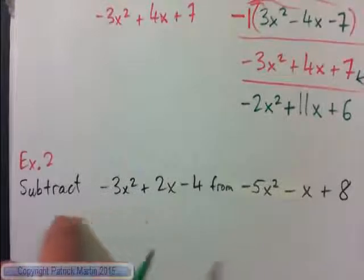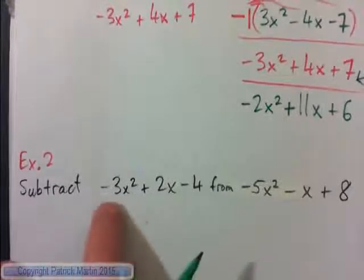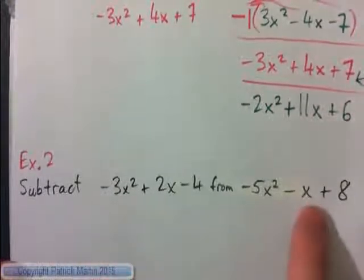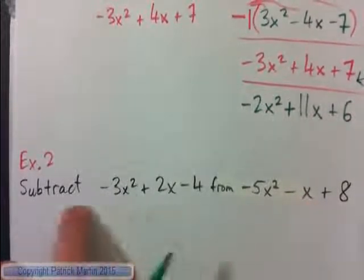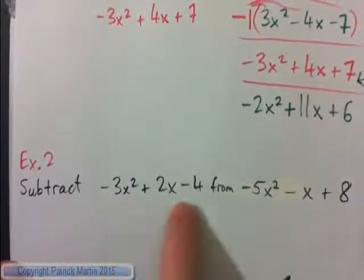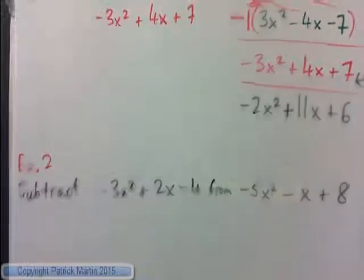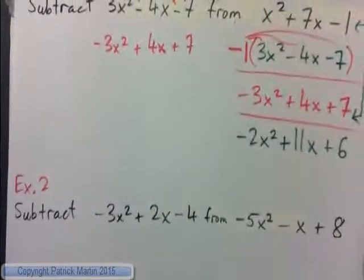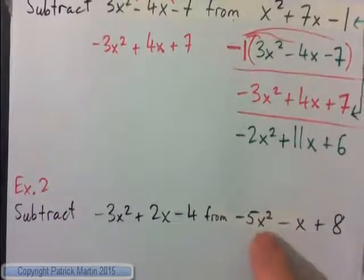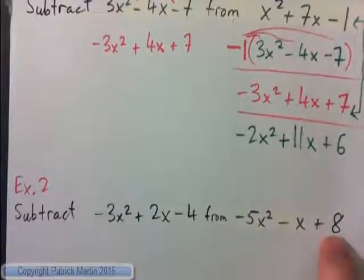So please try this one yourself — press pause. You're going to subtract this from this: negative 3x squared plus 2x minus 4 from negative 5x squared minus x plus 8. Press pause and do this one yourself.